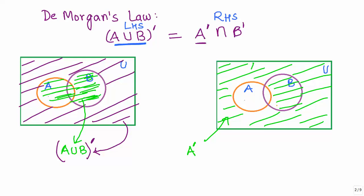Now let us look at B complement. B complement is nothing but everything except the elements within B. I'm using an orange color. Please note that the part of A that doesn't belong to B also falls within B complement. Now we are supposed to find the common elements between A complement and B complement.